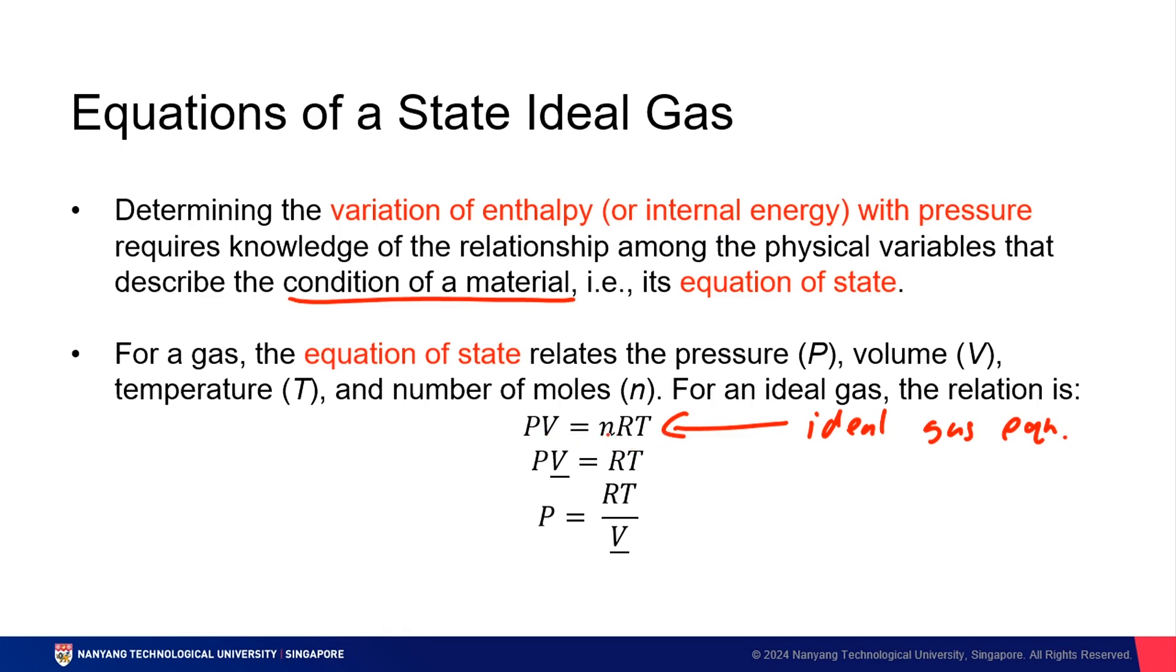PV equals nRT. P is pressure. V is volume. N is the number of moles. T is temperature. R is the ideal gas constant. It doesn't change.